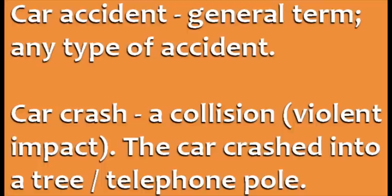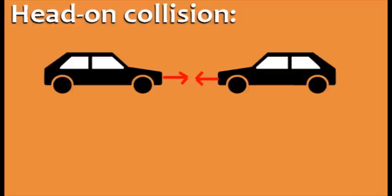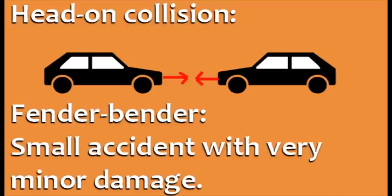Here are four specific types of accidents. When two vehicles crash into each other while traveling in opposite directions, we call this a head-on collision. This is one of the deadliest types of accidents. On the other end of the spectrum is a fender bender, which describes a small accident with very minor damage to the cars involved.